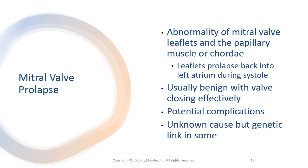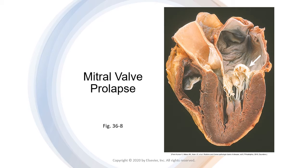Mitral valve prolapse is usually benign, but serious complications can occur, including mitral regurgitation, infective endocarditis, sudden cardiac death, heart failure, and cerebral ischemia. Although the cause is unknown, there is an increased familial incidence. The genetic inheritance is often autosomal dominant. Mitral valve prolapse in this group results from a connective tissue defect affecting only the valve, or as part of Marfan syndrome or other hereditary conditions that affect collagen structure.